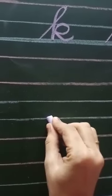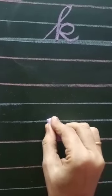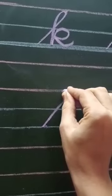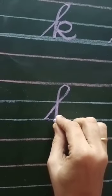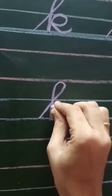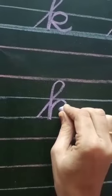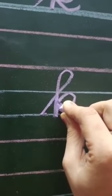To write small k, start from lower blue line. From the lower blue line, draw a slanting line and go up, turn it back and one. Then again go up till the first blue line and make a loop like this. And go down. This is small k.